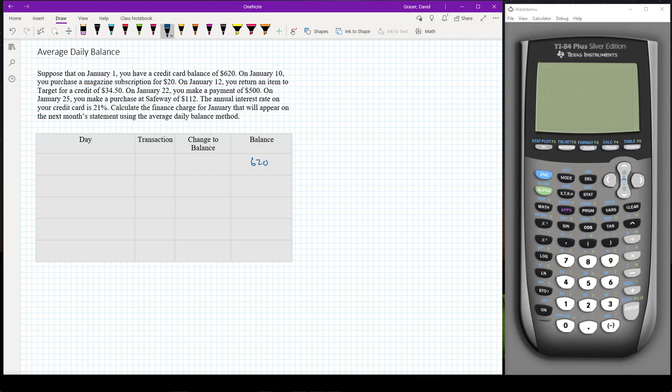The next transaction I have is on January 10th. That means on the 1st, the 2nd, the 3rd, the 4th, the 5th, the 6th, the 7th, the 8th, all of those days and the 9th, I'm going to have that balance.